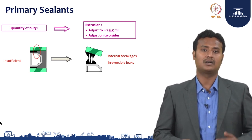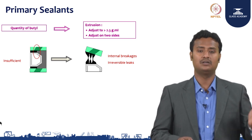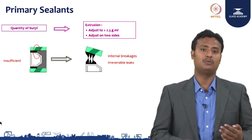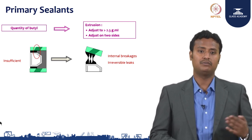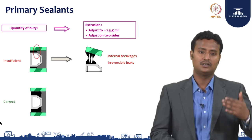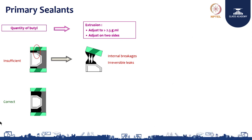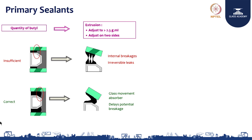Due to wind load, the glass may deflect. In order to absorb that deflection — whether it is a seismic or flexible load — the butyl will help prevent glass breakage at the time of wind load. We have to carefully fill the primary sealant. You can see here the primary sealant has been filled properly — slightly excessive at 2.5 milligrams per meter — but this allows the glass movement to be absorbed. If the glass starts moving due to high wind load, it will absorb that glass movement and delay potential breakages. If the primary sealant is insufficient it will not perform this function effectively.